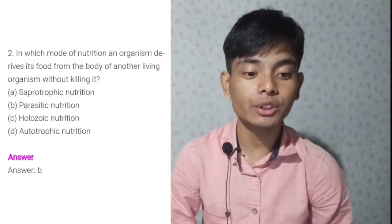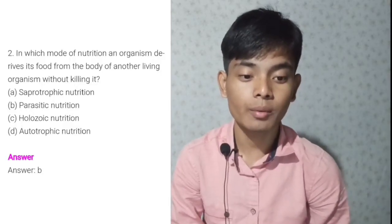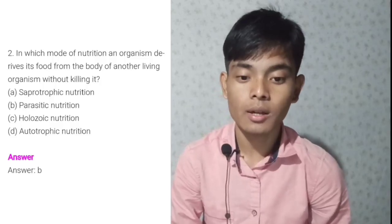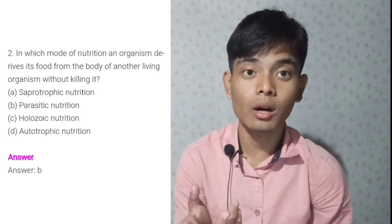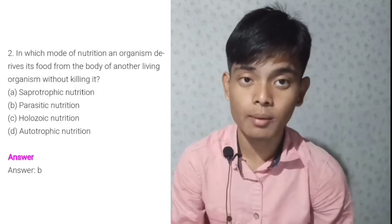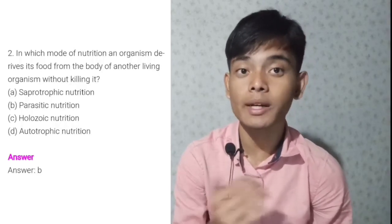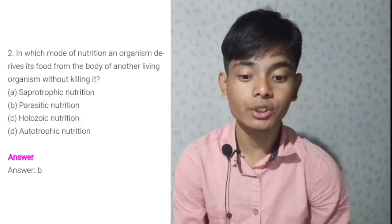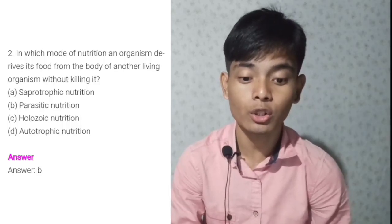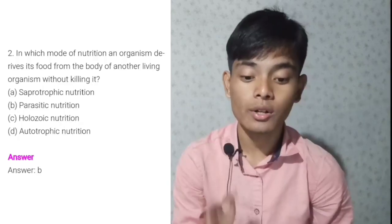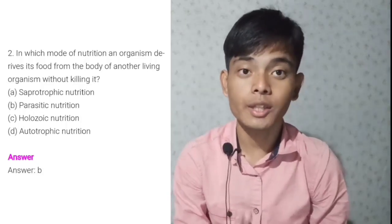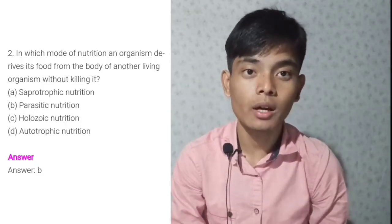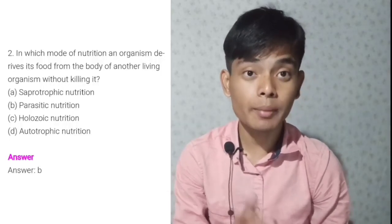Question number two: In which mode of nutrition does an organism derive its food from the body of another living organism without killing it? A — saprophytic nutrition. B — parasitic nutrition. C — holozoic nutrition. D — autotrophic nutrition. Answer hoise B — parasitic nutrition. For example, tapeworm — parasitic organisms jeh host parah nutrition absorb kare without killing the host.